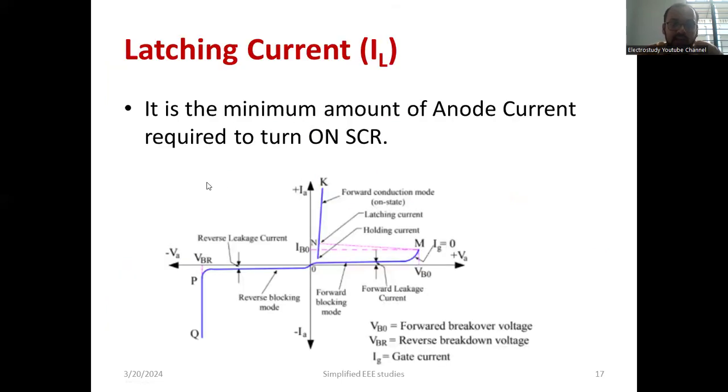What is the meaning of latching and holding current? Let's see the definition first. The latching current is nothing but the minimum amount of anode current which is required to turn on the SCR at fully on state. That is generally called as latching current.